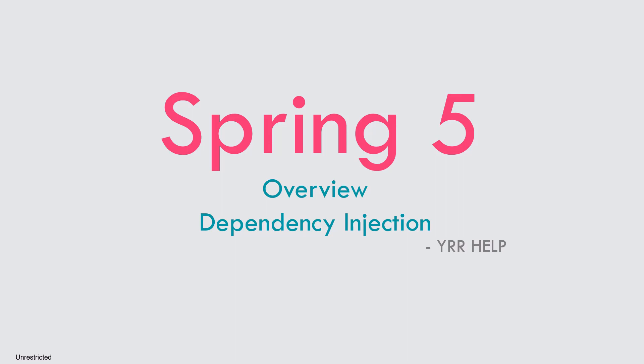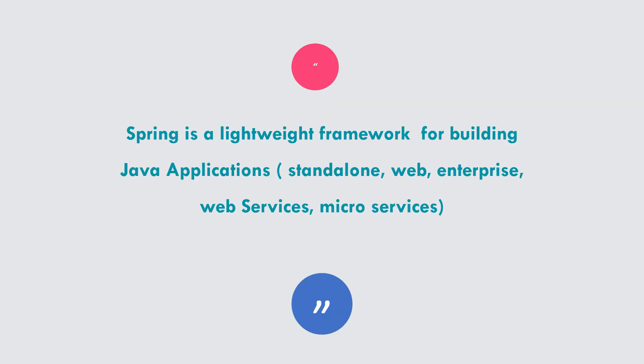Welcome to YRR help. This is my first video on the Spring 5 series. In this video I'm going to give you a quick overview on what Spring 5 is, what are the different modules available, and I'm going to give you a quick introduction to dependency injection and the different types of dependency injection available. On a high level, Spring is a very lightweight framework for building different Java applications. You can develop standalone applications, web, enterprise, web services, and microservices. The reason I specified lightweight is because you need minimal configurations to integrate the Spring framework into your application.